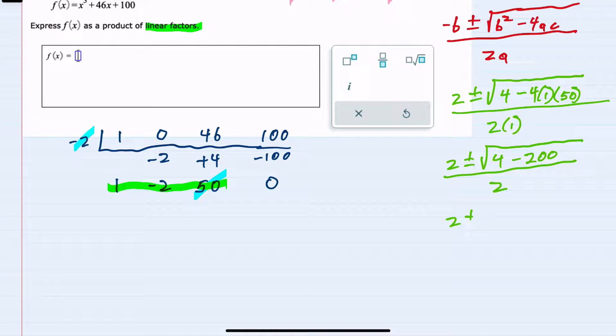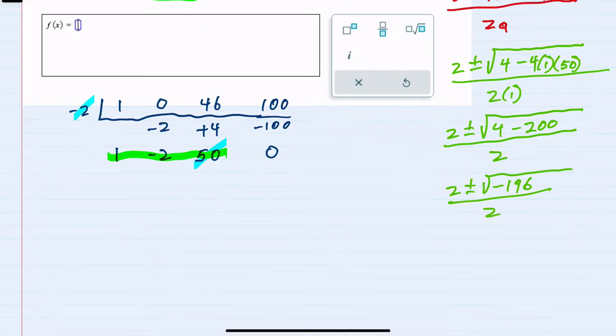Simplifying further, under the radical 4 minus 200 is a negative 196. And then to simplify that radical, I see a negative underneath. So I know I'll have an i. And 196 is a perfect square.